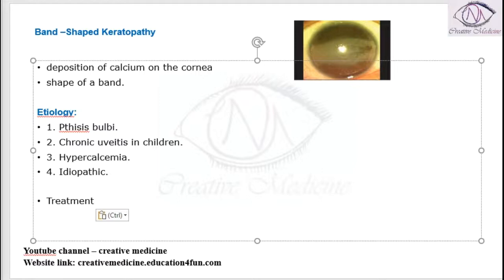Treatment of band-shaped keratopathy is by chelation, which can be done with the help of EDTA.